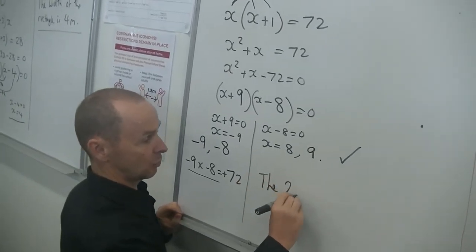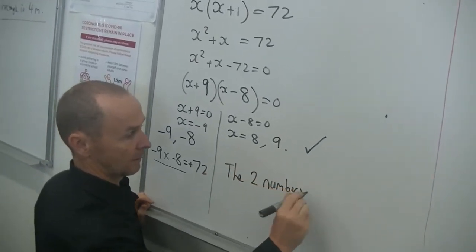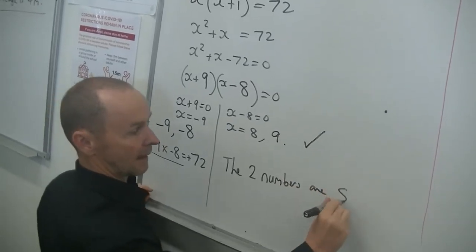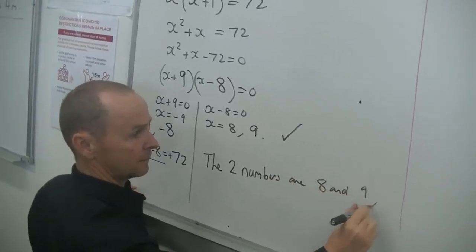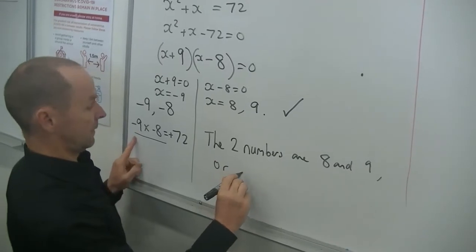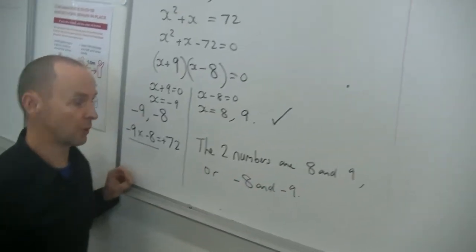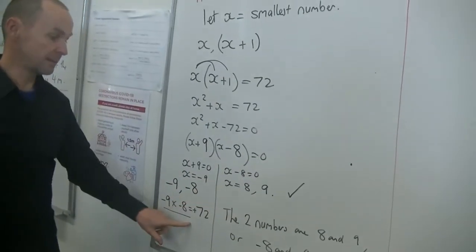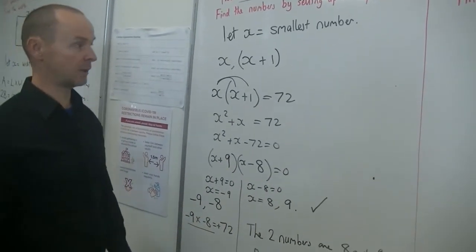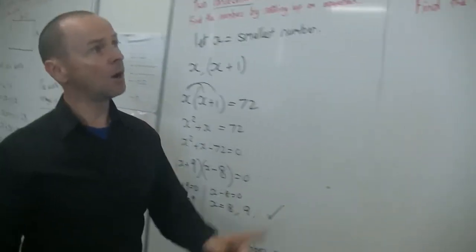So to answer this question in words, you say, the two numbers are 8 and 9 or negative 8 and negative 9. So that was a bit of a trick question. If you didn't get both sets of answers, you will not get full marks for that question.